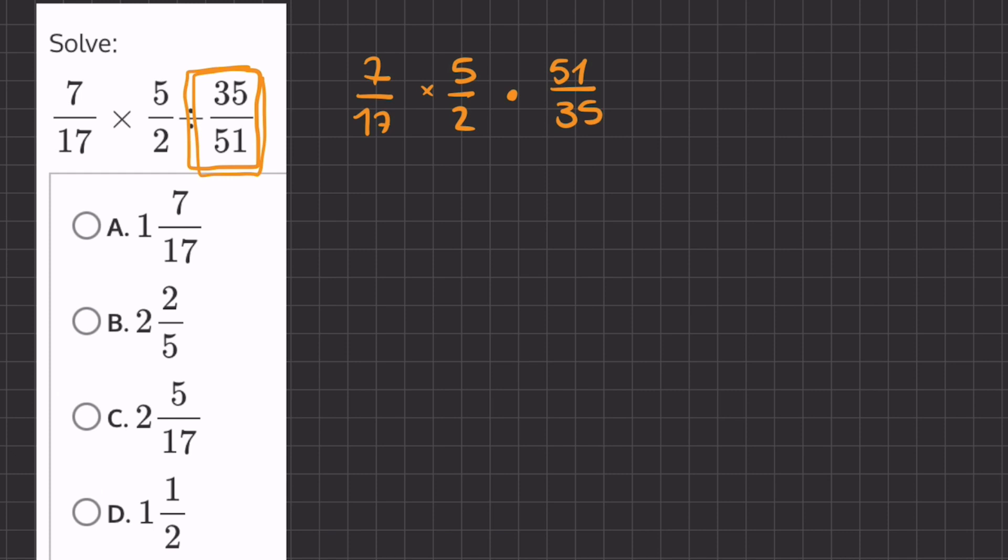So, we can take the denominators and switch their places. If we take the 17, we'll want to place it under 51, because we know that it's going to be divisible by 51. And so, let's do so. We'll have 51 over 17.